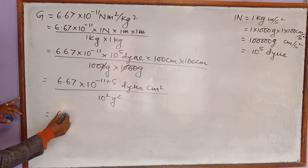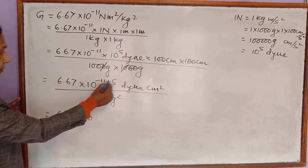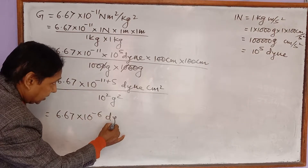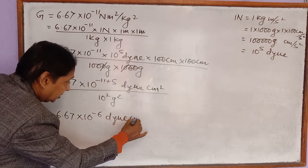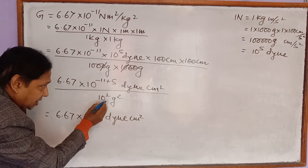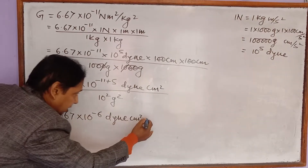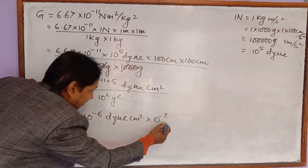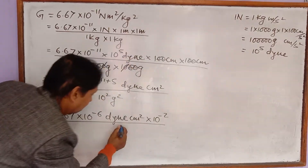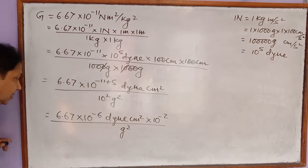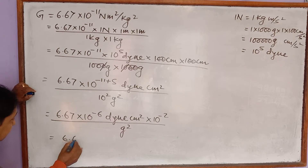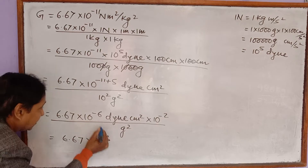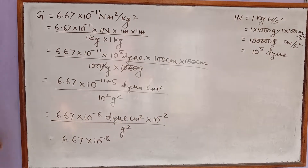This is equal to 6.67 into 10 to the power (minus 11 plus 5) = minus 6, in dyne centimeter square. Now if 10 to the power 2 is taken to the numerator, it becomes 10 to the power minus 2, and gram square remains in the denominator. This gives 6.67 into 10 to the power (minus 6 minus 2) = 10 to the power minus 8 dyne centimeter square per gram square.